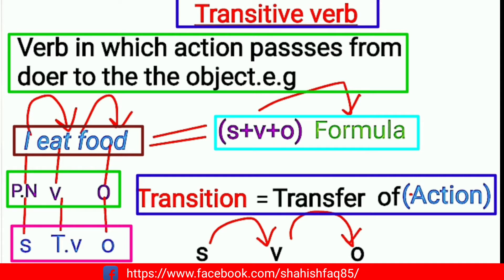The action transfers from the subject to the object. The subject performs the action, and that action is transferred to the object. So in a transitive verb sentence, both subject and object are present, and the action moves from subject to object.